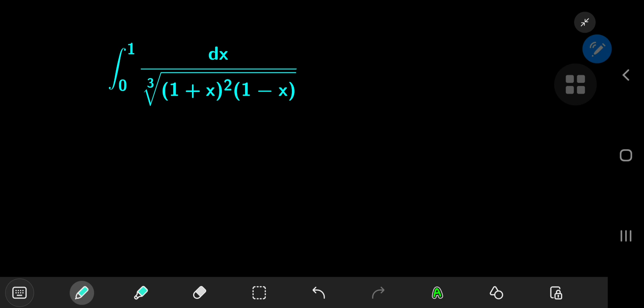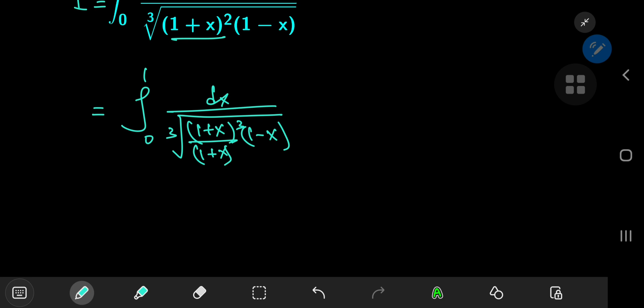Before we apply the substitution, some simplification is in order. I'm going to call this integral i for reference purposes, and I'm going to expand using this 1 plus x term. So I have the integral from 0 to 1 of dx divided by the cube root of 1 plus x cubed times 1 minus x, which simplifies to the integral from 0 to 1 of dx divided by 1 plus x times the cube root of 1 minus x divided by 1 plus x.